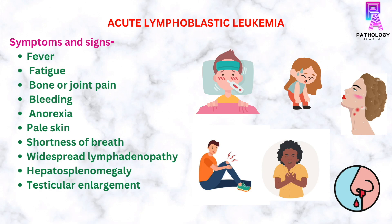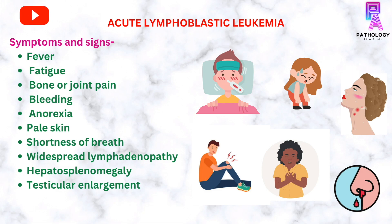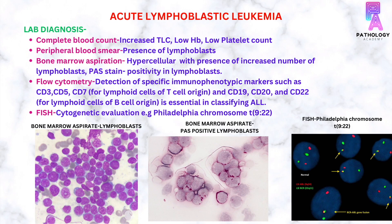Symptoms and signs of acute lymphoblastic leukemia: the common symptoms include fever, fatigue, bone or joint pain, bleeding, anorexia, pale skin, and shortness of breath. The patient could also present with widespread lymphadenopathy, hepatosplenomegaly, and some patients show testicular enlargement.